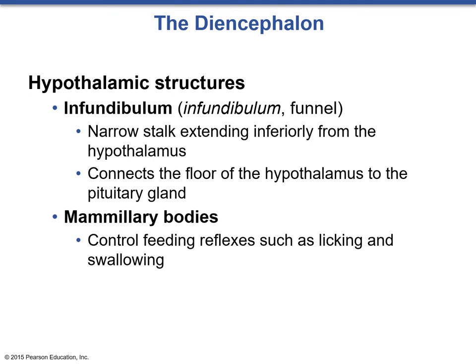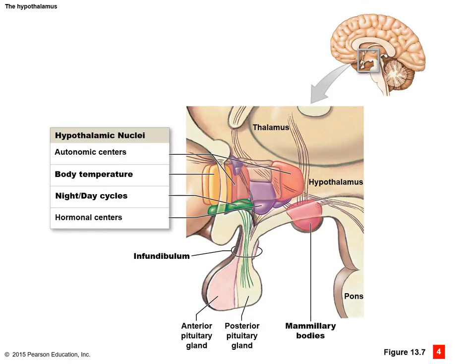Supporting structures for the hypothalamus include the infundibulum and the mammillary bodies. The infundibulum — meaning funnel — is a stalk that connects the hypothalamus to the pituitary gland and contains a number of blood vessels including a portal system. Mammillary bodies are extensions of the hypothalamus that control feeding reflexes such as licking and swallowing and are very active in infants. A diagram of the hypothalamus shows its centers: autonomic centers, body temperature regulation, night and day cycles, and hormonal centers that link via the infundibulum to the pituitary gland. The mammillary bodies are visible in the posterior aspect.